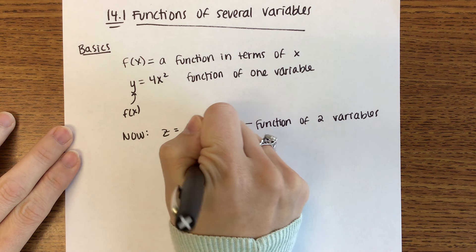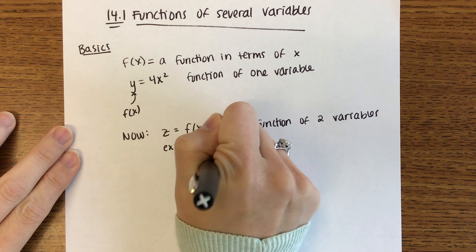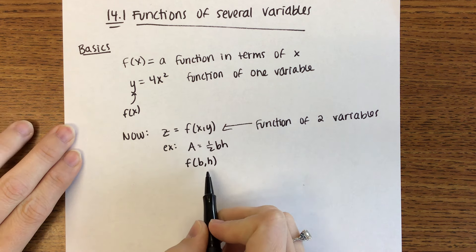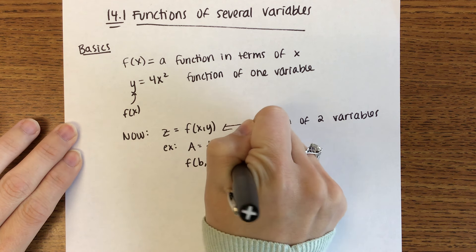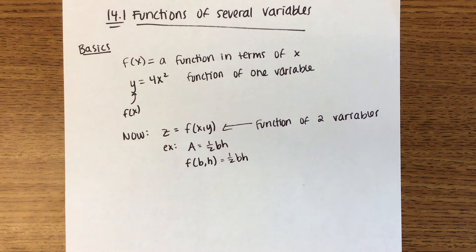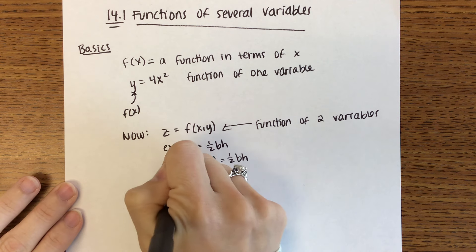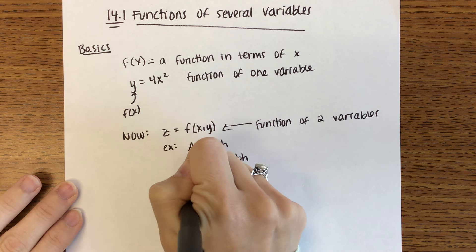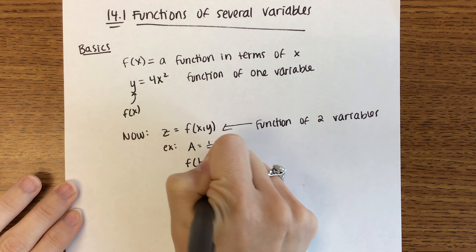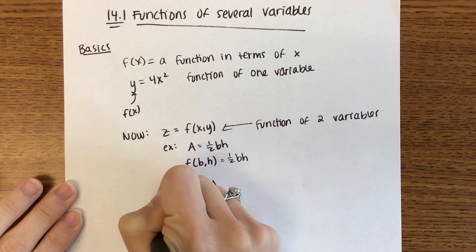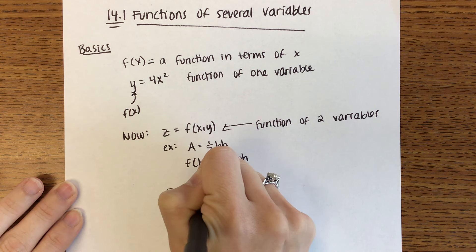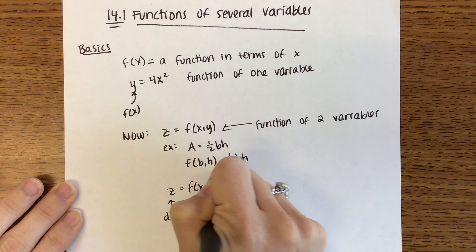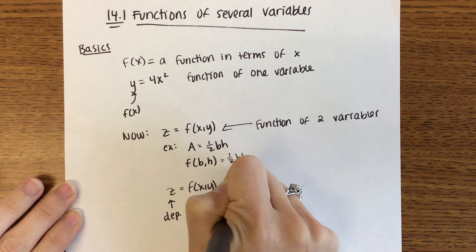To write this in function notation, we would write f of b, h equals one-half base times height. That's z equals f of x, y. z we call the dependent variable. x and y we call the independent variables.